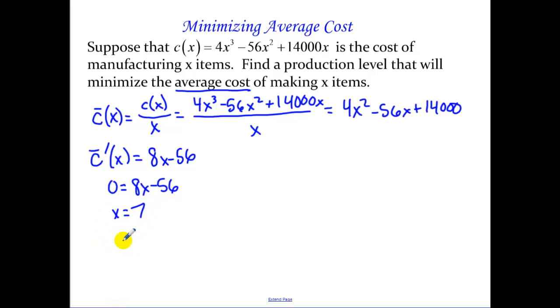Now I need to verify by either the first derivative or second derivative test. I like the second derivative test for a lot of these because my second derivative here is fairly nice—that's just 8, which is greater than 0, which means I'm concave up.